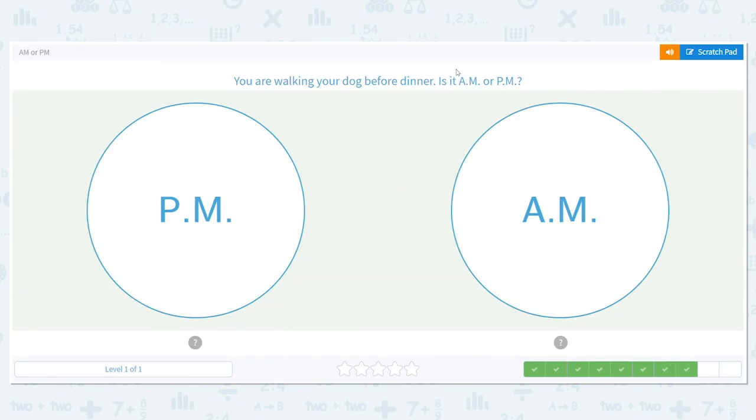You're walking your dog before dinner. Before dinner, is that A.M. or P.M.? Before dinner, dinner is later in the day, so that would be P.M.